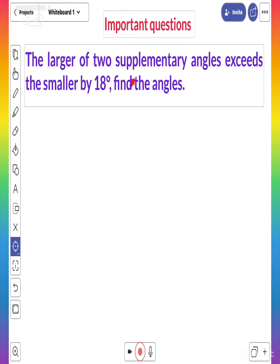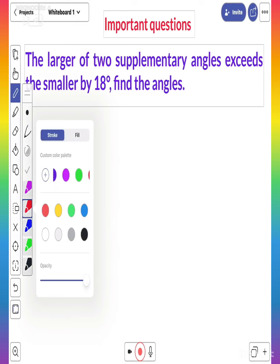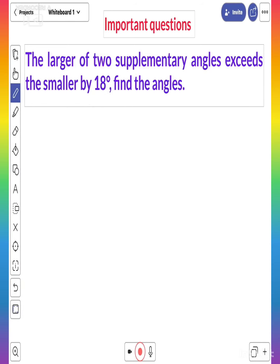According to the question there are two supplementary angles. Let us say if one is x degrees, then the other angle exceeds it by 18 degrees. So how can you find? Let us solve this question.